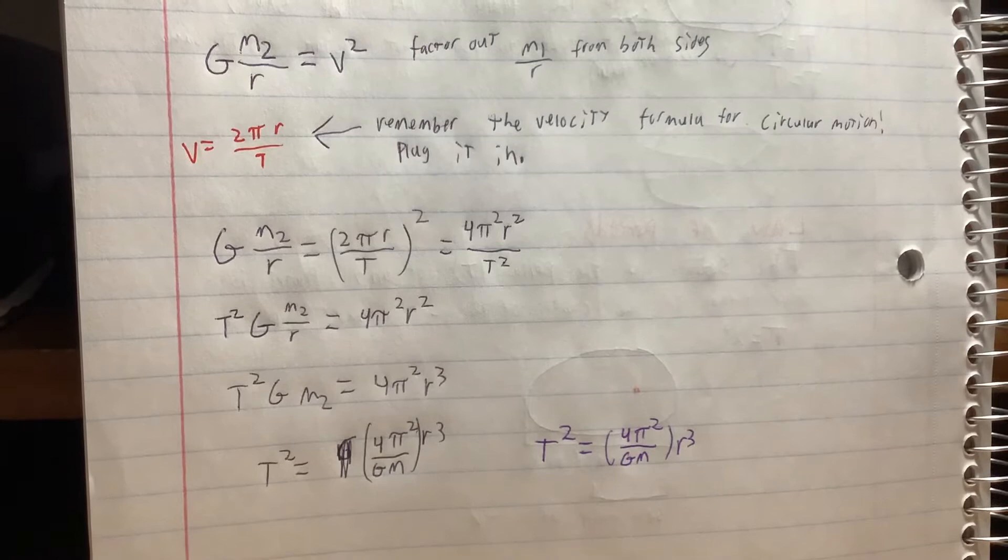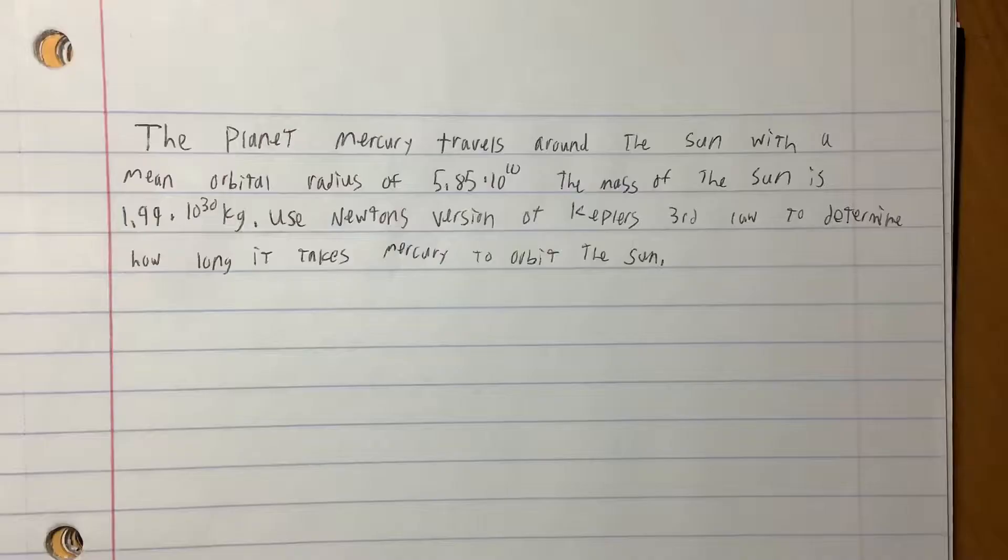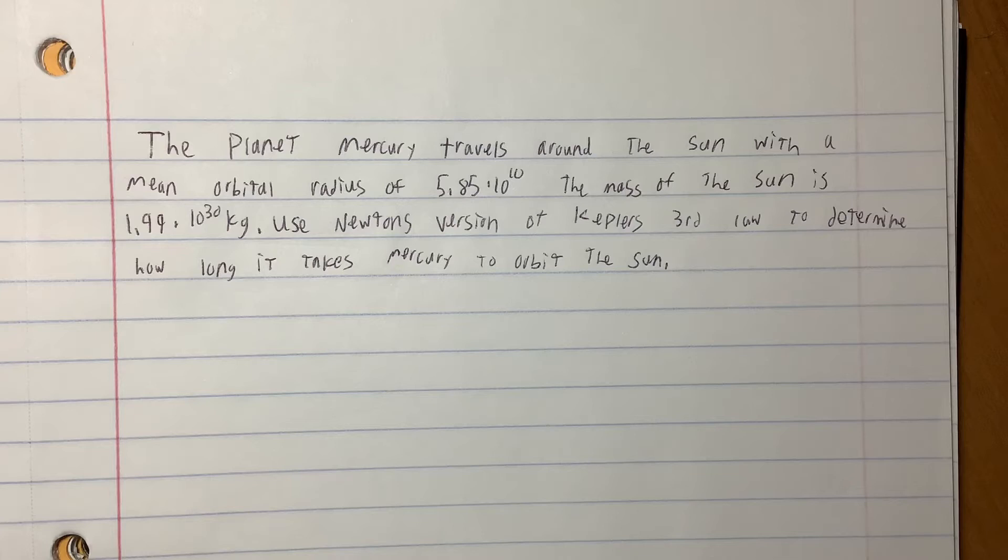Next up we'll move on to an actual problem using Kepler's third law of motion. I got this example problem off the internet. The planet mercury travels around the sun with a mean orbital radius of 5.85 times 10 to the 10th power. The mass of the sun is 1.99 times 10 to the 30th power kilograms. Use Newton's version of Kepler's law to determine how long it takes mercury to orbit the sun.